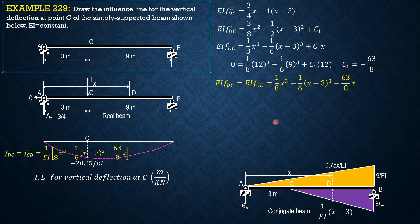Computing for theta A, considering the whole system, summation moment B equals 0. So theta A times 12 plus 1 half of 12 times 9 over EI times 4, moment arm is 1 third of 12 so 4, equals 1 half of 9 times 9 over EI, 1 third of 9 is 3.